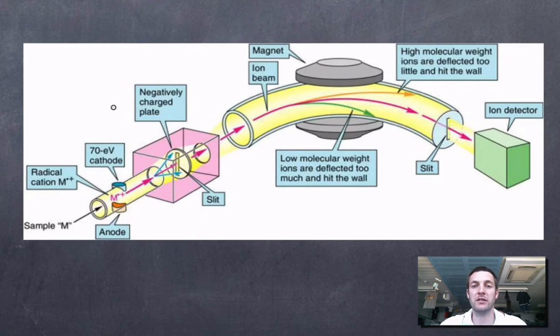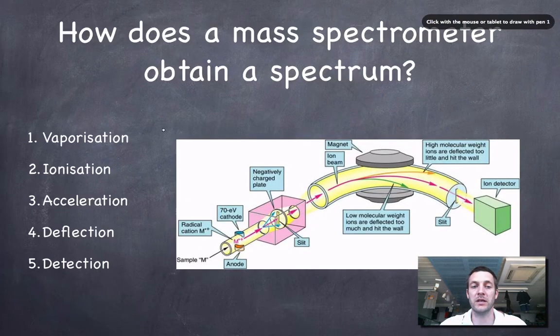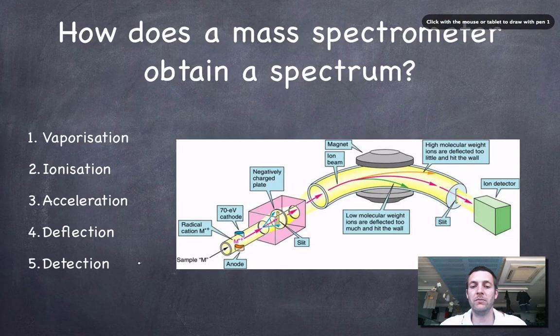But it's important to know the sequence of processes taking place in here. So you need to know these as facts. You need to commit them to memory. There are five stages that will be examined, and they are vaporization, ionization, acceleration, deflection, and detection.